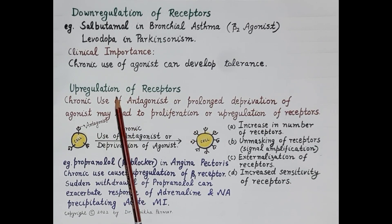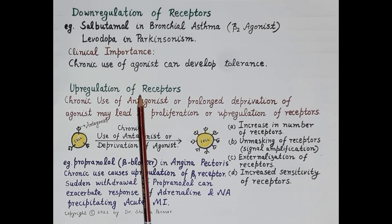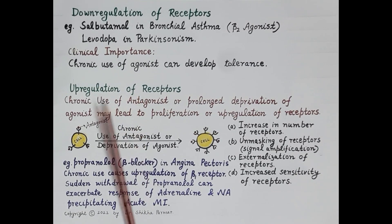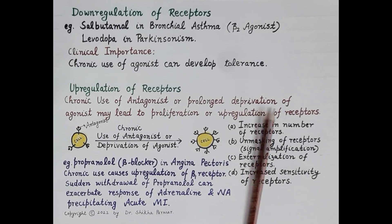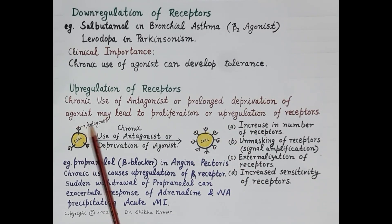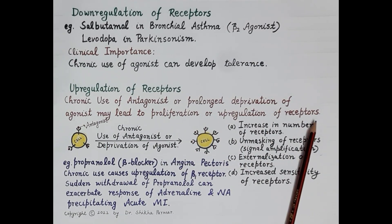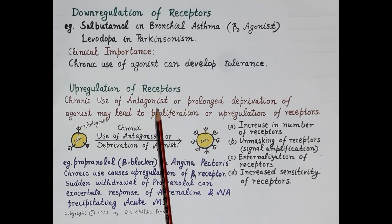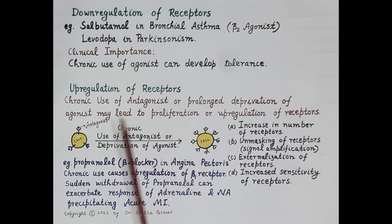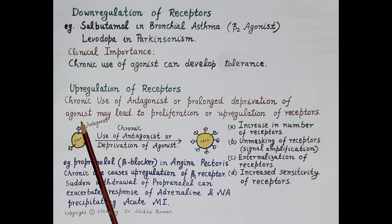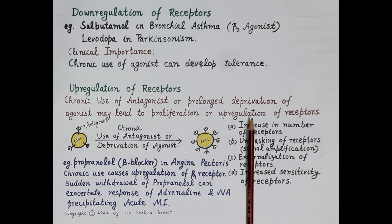Now let's discuss up regulation of receptors — an increase in the number of receptors. Chronic use of an antagonist or prolonged deprivation of agonist leads to proliferation or up regulation of receptors. Prolonged use of antagonist or prolonged non-availability of agonist increases the number of receptors in a tissue, and this phenomenon is termed up regulation of receptors.